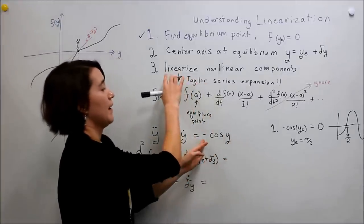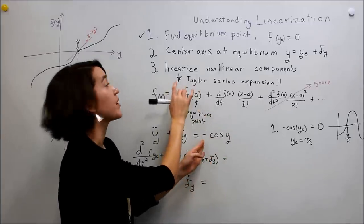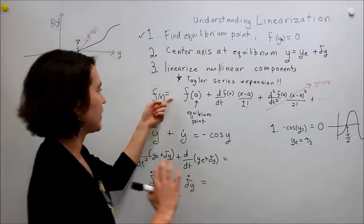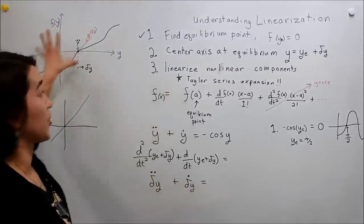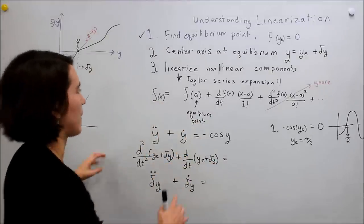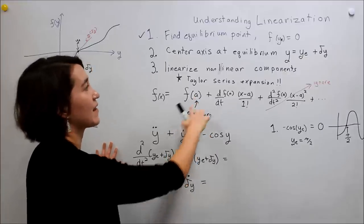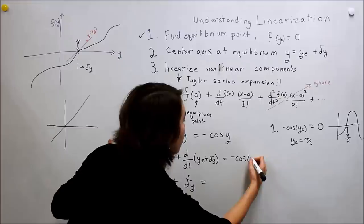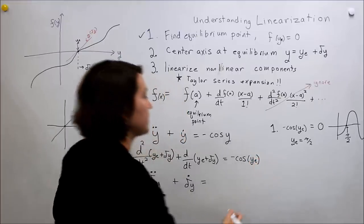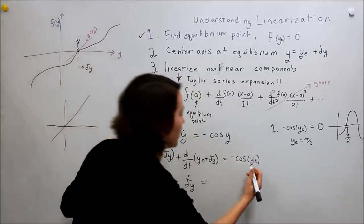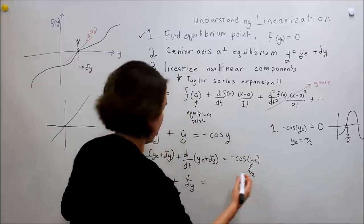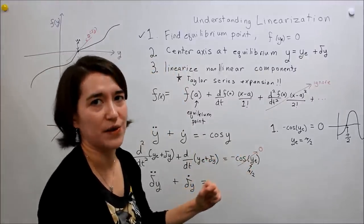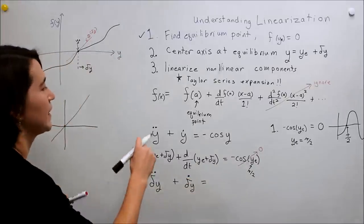Now we go to the right side and look at that. We can see that −cos(y) is not linear, so we need to linearize it using the Taylor series expansion. Let's remember the Taylor expansion and apply it to our terms directly. First we need f(a): in this case a is our equilibrium value, so we take −cosine of y_e = −cos(π/2), which equals zero.